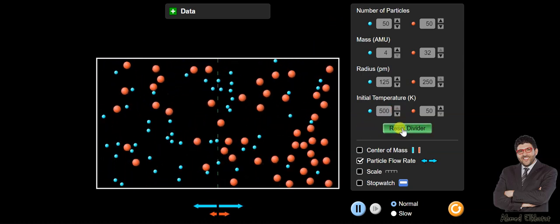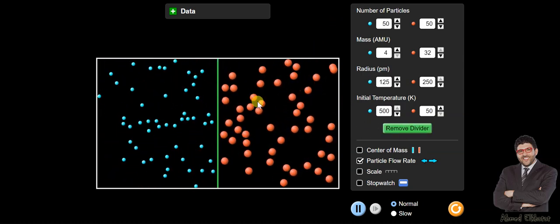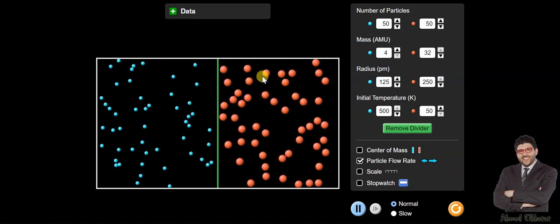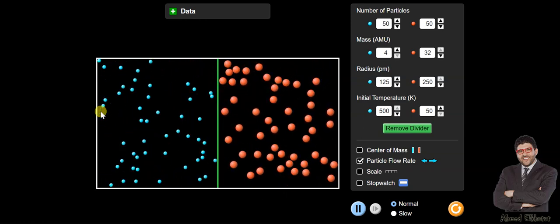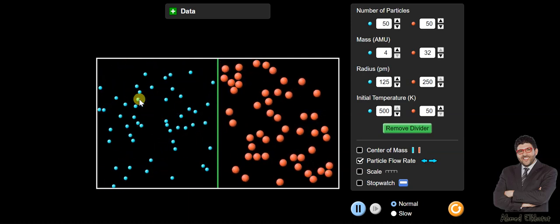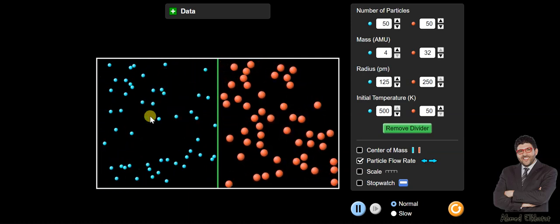Let's set the divider again. As you can see, when we put larger particles or heavier particles, the diffusion is small. When we put smaller particles and increase temperature, the diffusion is very quick.